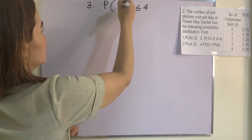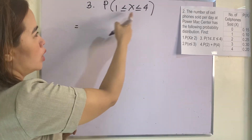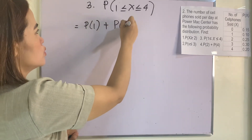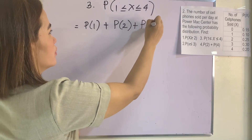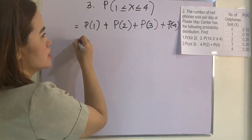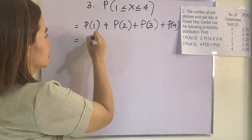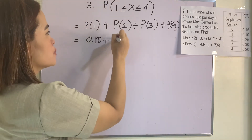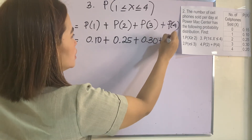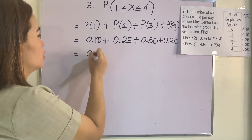For number 3, P(1 ≤ X ≤ 4): the values between 1 and 4 inclusive are 1, 2, 3, and 4. So P(1 ≤ X ≤ 4) = P(1) + P(2) + P(3) + P(4) = 0.10 + 0.25 + 0.30 + 0.20 = 0.85.